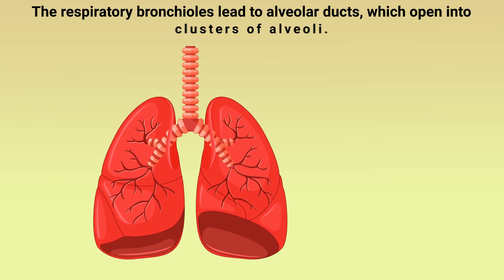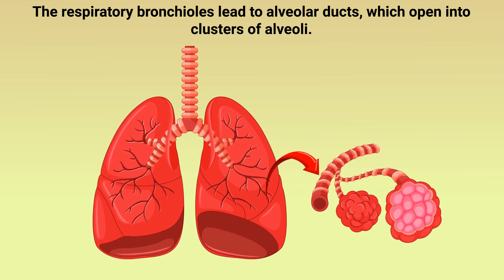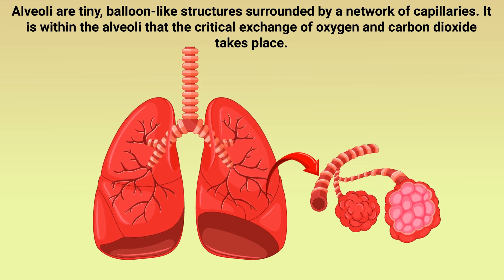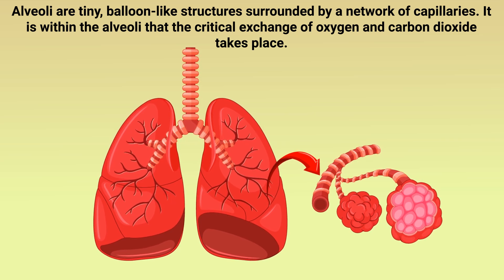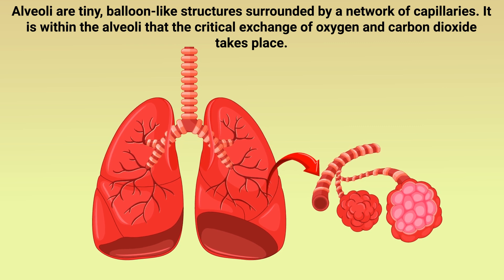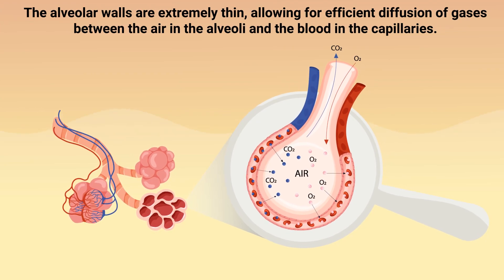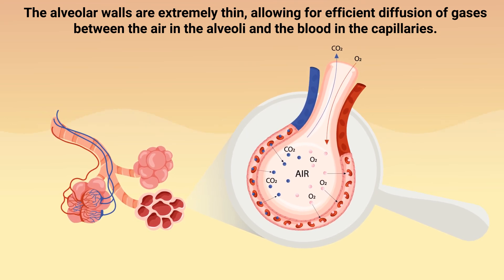The respiratory bronchioles lead to alveolar ducts, which open into clusters of alveoli. Alveoli are tiny balloon-like structures surrounded by a network of capillaries. It is within the alveoli that the critical exchange of oxygen and carbon dioxide takes place. The alveolar walls are extremely thin, allowing for efficient diffusion of gases between the air in the alveoli and the blood in the capillaries.